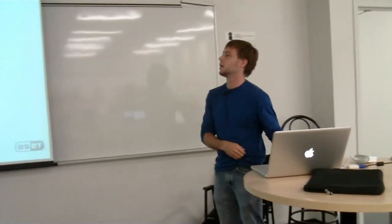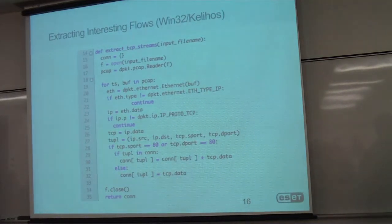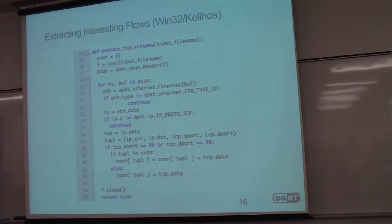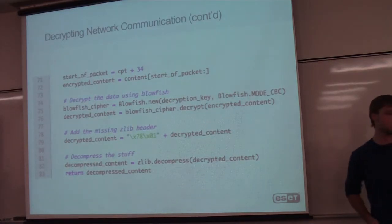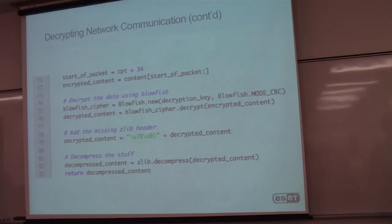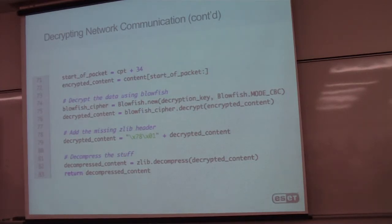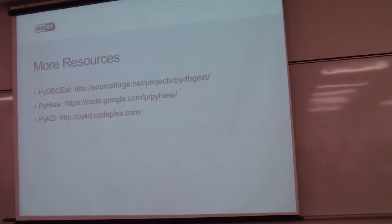Another thing we want to do is, once we have reverse engineered some malware and understood how it communicates on the network, write a quick Python script. This one uses DPKT to extract packets from a network capture (pcap) and find all the different data streams using HTTP or TCP port 80. In this case — Kelihos — it's using Gzip compression and then encrypting its data using Blowfish. Having Python with all these libraries like pycrypto is very useful because I don't have to reimplement all these algorithms. Within half an hour I have a script that allows me to decrypt network communication.